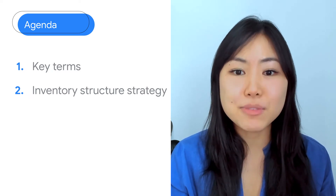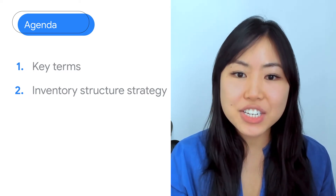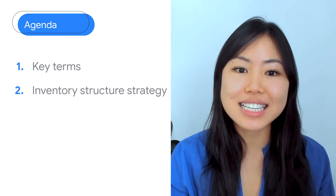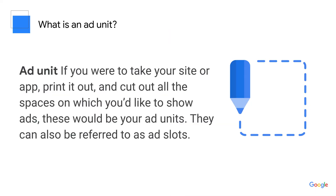Let's start with the key terms to know. Understanding these terms will make your setup process easier and more direct. The first is ad units. Ad units are the actual ad slots on your page. To help visualize this, imagine printing out your website and cutting out all the spaces where you would like to show ads. Those are your ad units. After this video, take the time to comb through your site or app and note where you would want ads to be placed. You can use our previous videos to help you determine that.